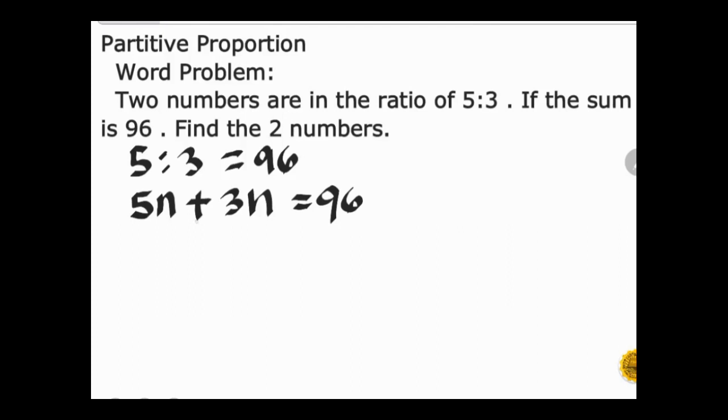Now add 5n and 3n equals 8n equals 96. Next, copy 8n equals 96.